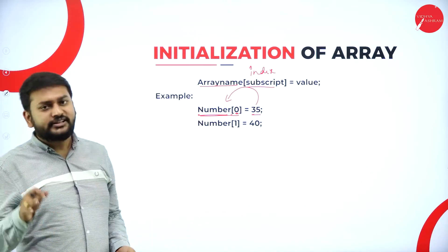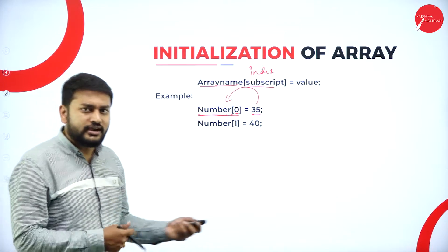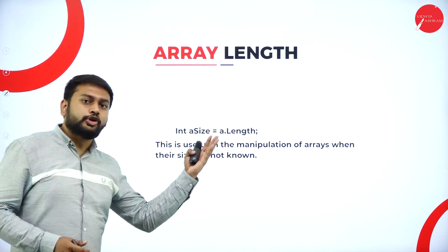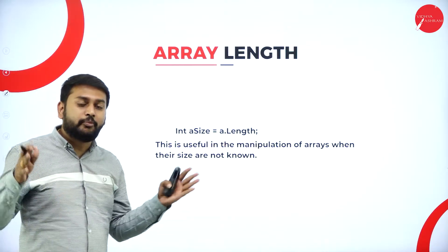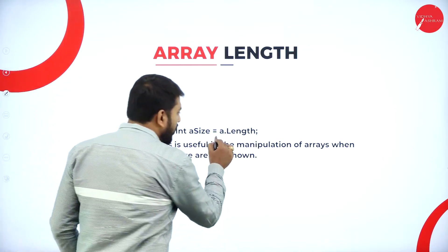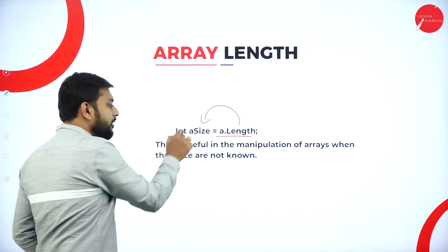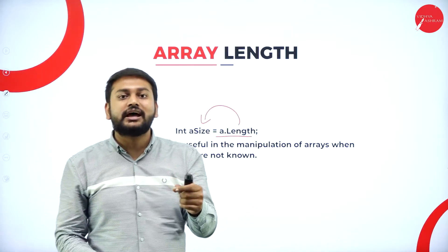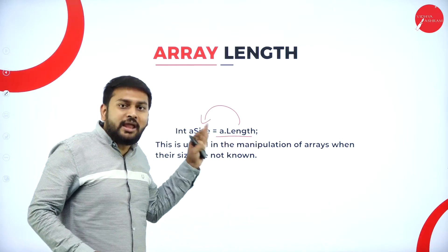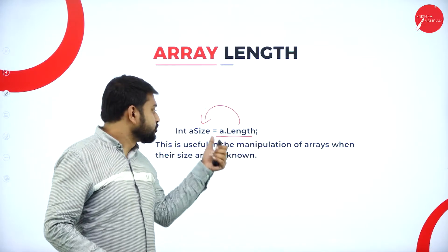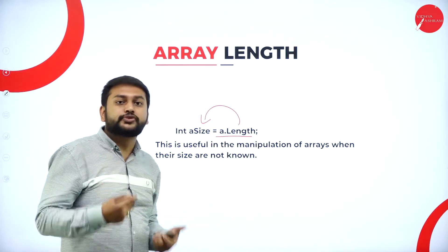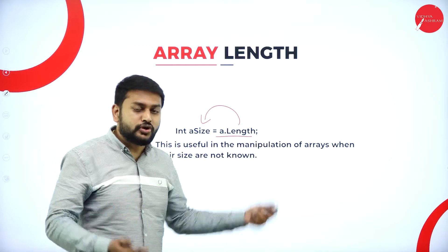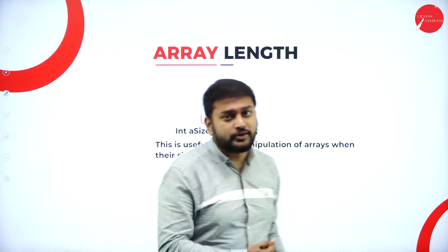To find the length of an array — that is, the number of elements — use array_name.Length. For example, number.Length gives the exact number of elements inside the array. This is stored in a variable and printed to get the array's length.